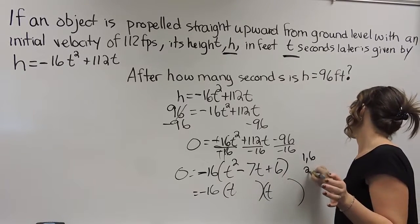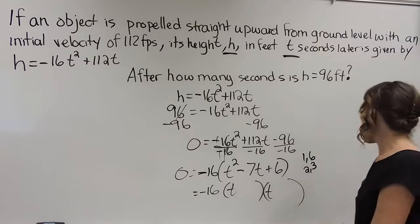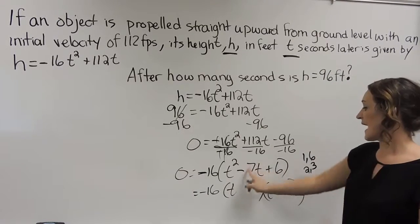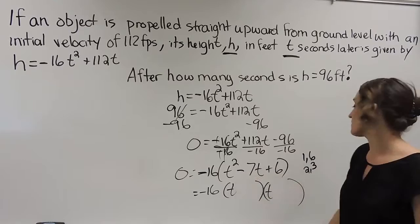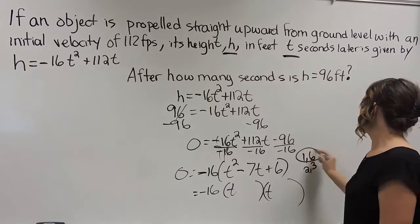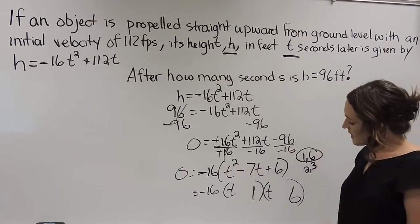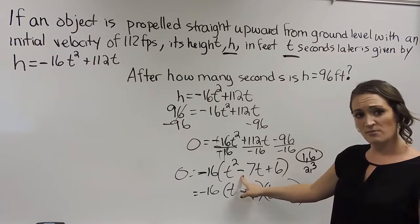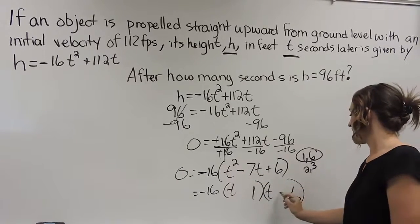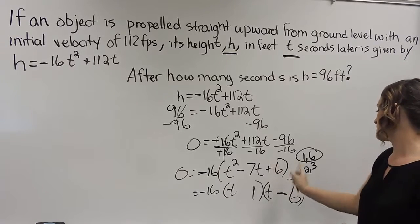And we want the combination that's going to add or subtract for our middle term, which is a 7, which tells us we have to use the 1 and the 6. Then looking at our signs, whatever sign your middle term has, the bigger one out of these has to have it. So that's going to go with a 6.